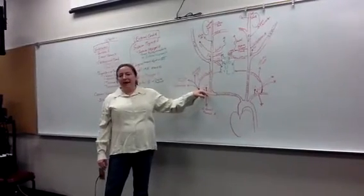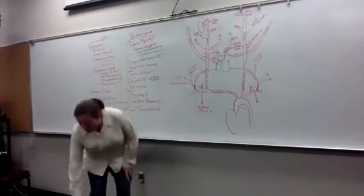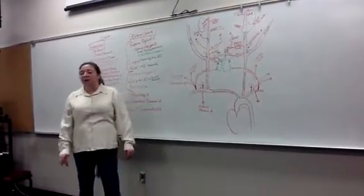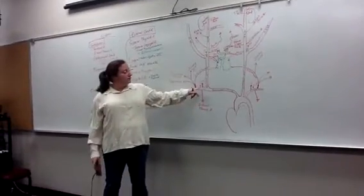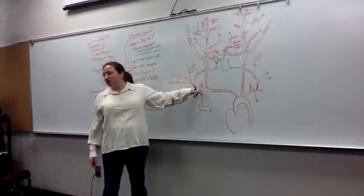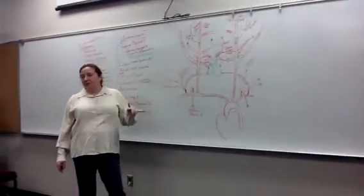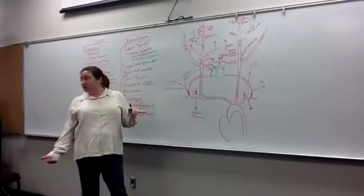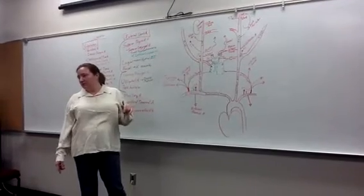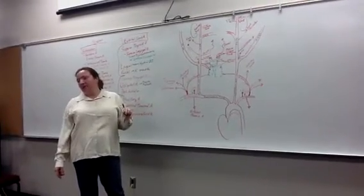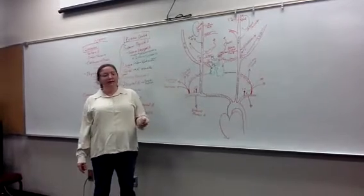Another branch comes off the back of the subclavian — it's very hard to see and doesn't show up on models, only in books. If you pull the subclavian forward, you'll see this branch coming off the back. It's called the costocervical trunk. The costocervical trunk gives off your dorsal scapular artery, which you met in second quarter, traveling with the dorsal scapular nerve to levator scap and rhomboids. It also gives off the deep cervical arteries, which you can see in Netter.